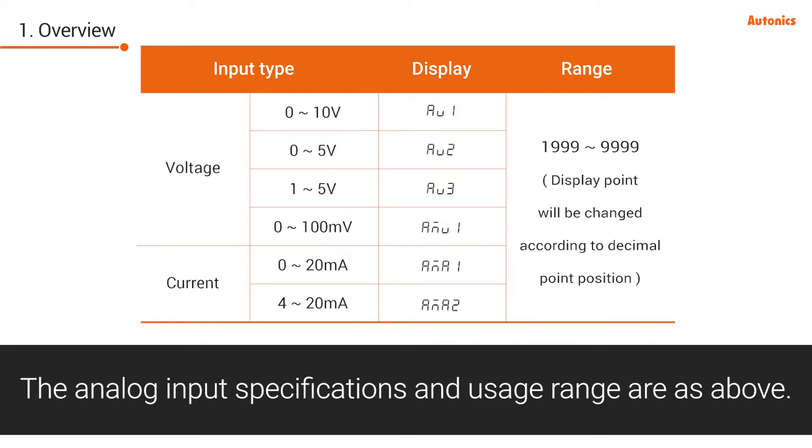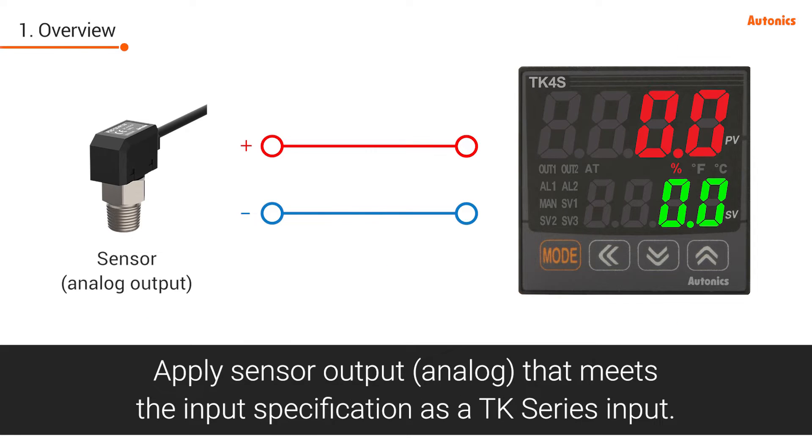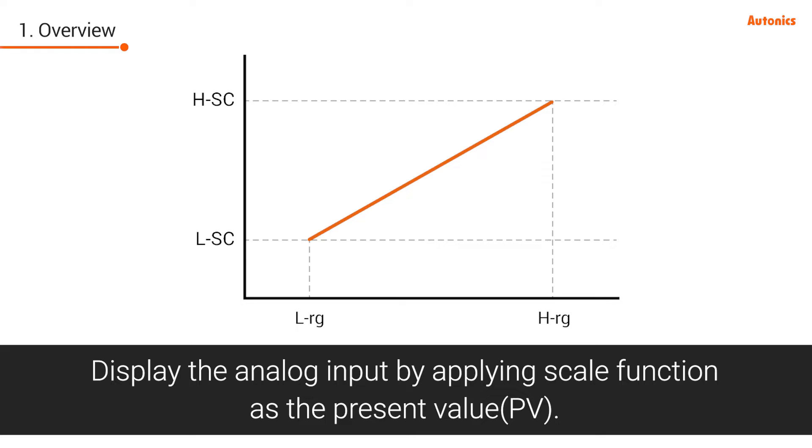The analog input specifications and usage range are as above. Apply a sensor output that meets the input specification as the TK series input. Display the analog input by applying scale function as the present value.